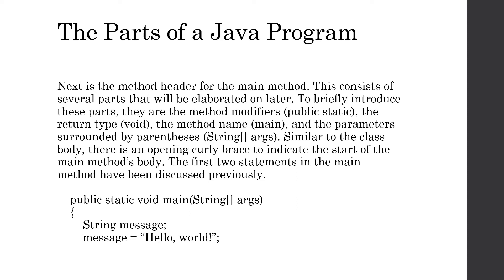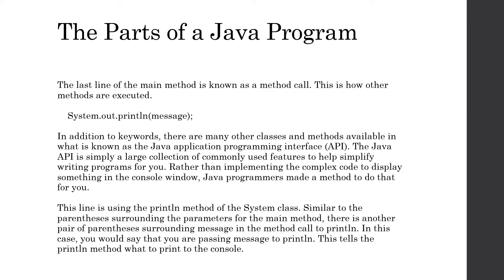Similar to the class body, we're going to have an opening curly brace to indicate the start of the main method's body. The first two statements are the string variable declaration - we're calling it message - and the assignment, where we're assigning the string literal hello world to message. Using a box analogy, we create a box whose shape and size is meant to hold strings, put a label on it called message, and then put inside of it the contents hello world. The last line of the main method is going to be a method call - this is how other methods are executed. Besides the main method, there are other methods we can use coming from existing classes or libraries given to us with the Java programming language.